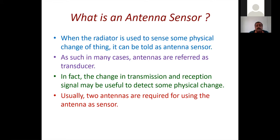The change in transmission and reception signal is key when using the antenna as a sensor. When some physical changes in an object can be sensed through my antenna, then it is an antenna sensor. Changes in transmission and reception signals may be useful to detect those physical changes. Usually two antennas are required for this, though sometimes a single antenna can do the sensing work. Planar antennas are very good for this scenario.